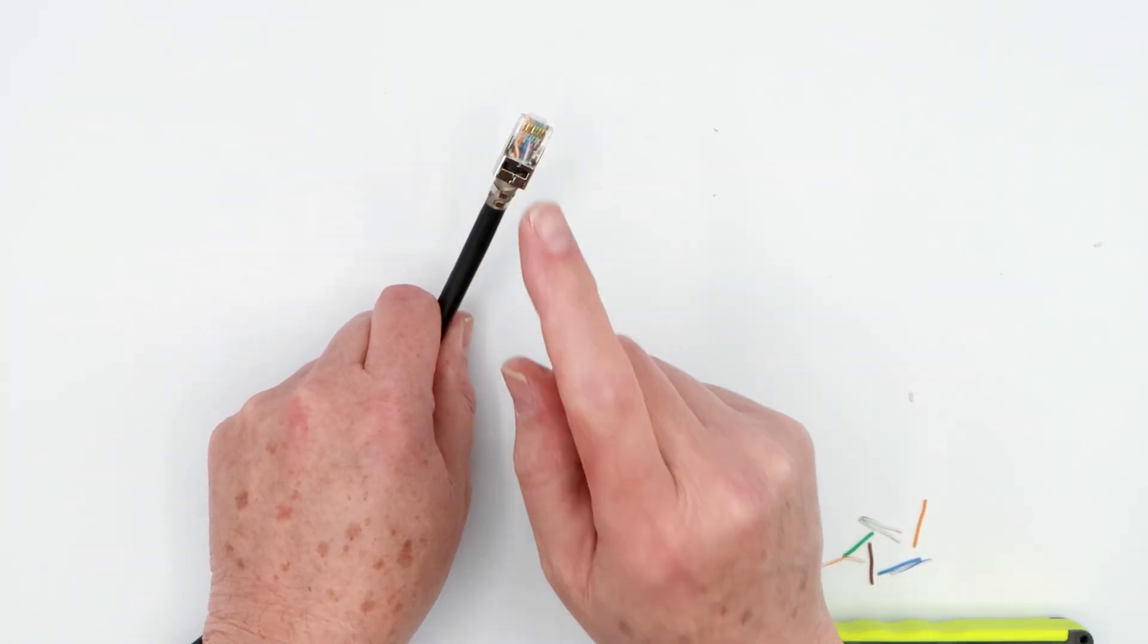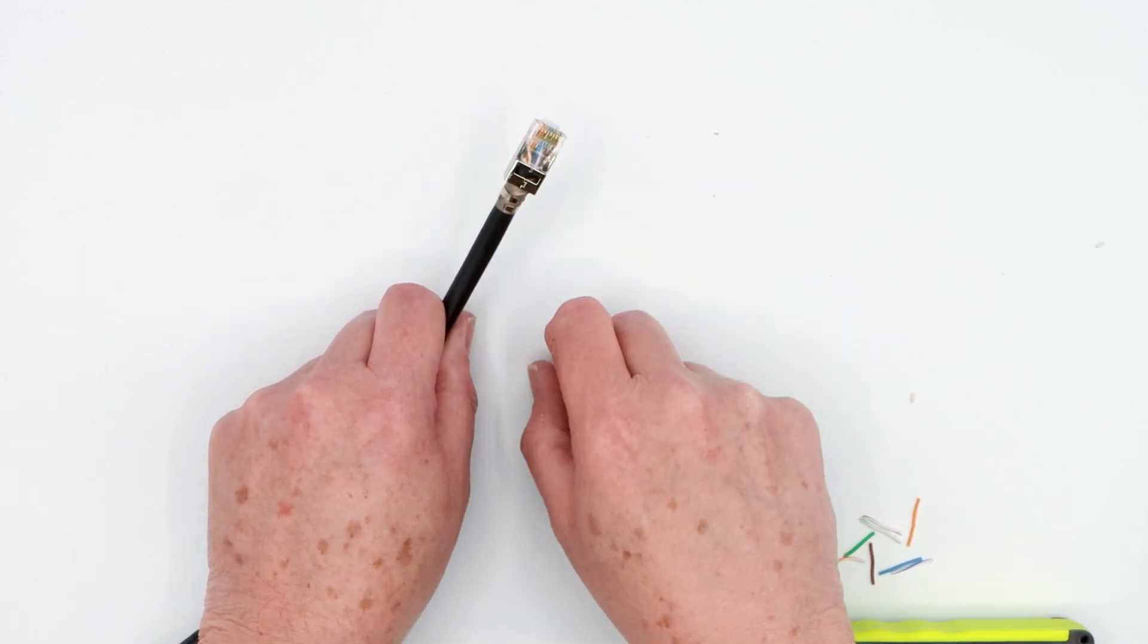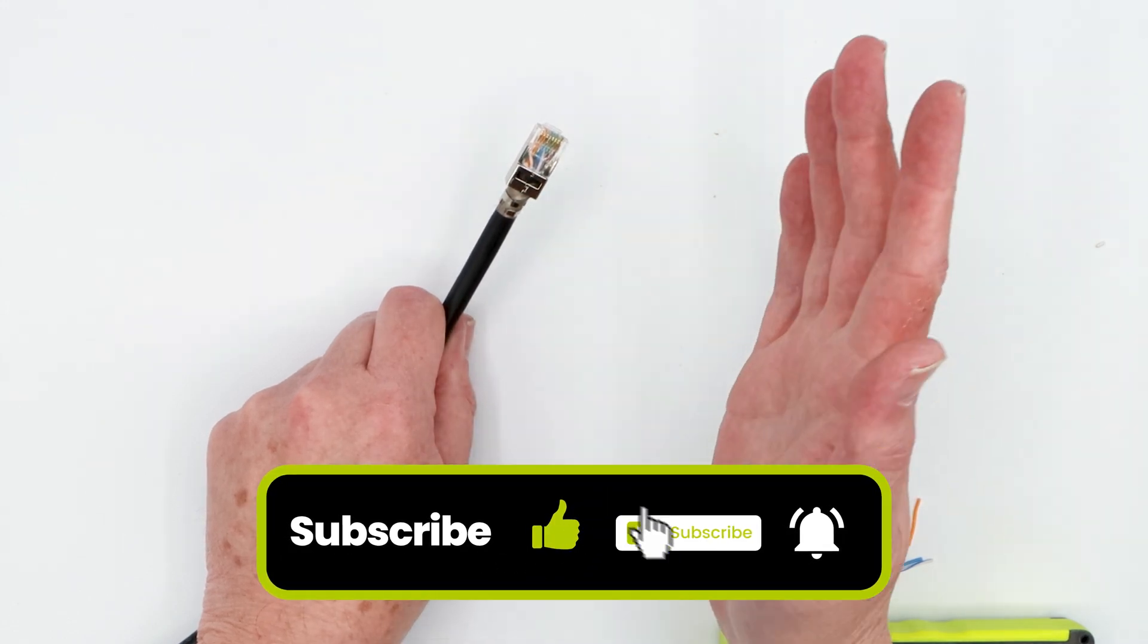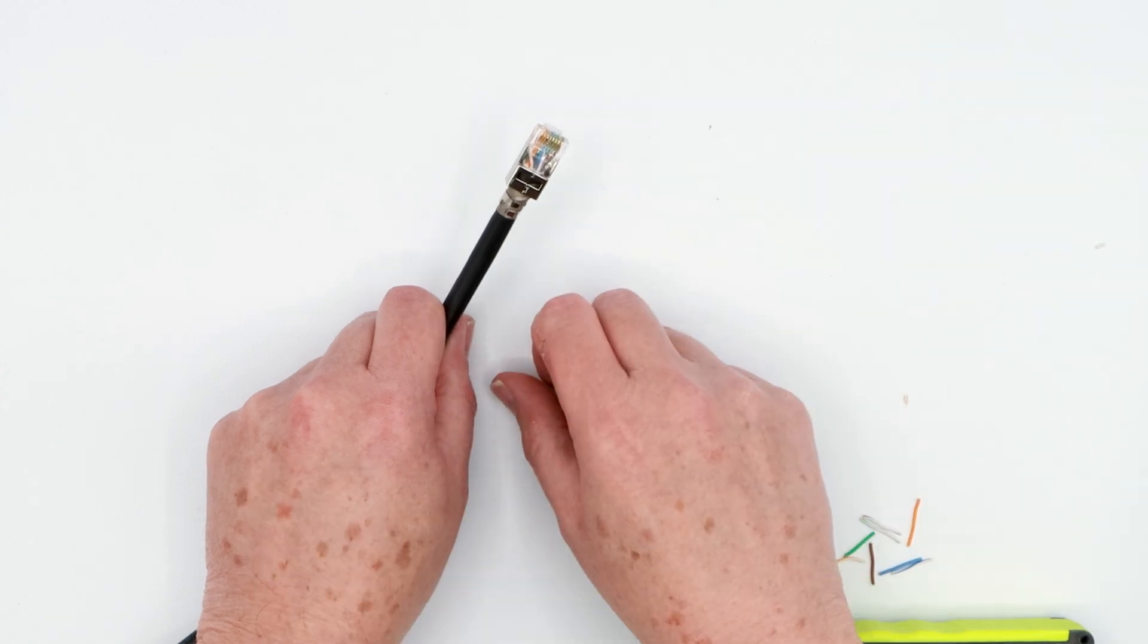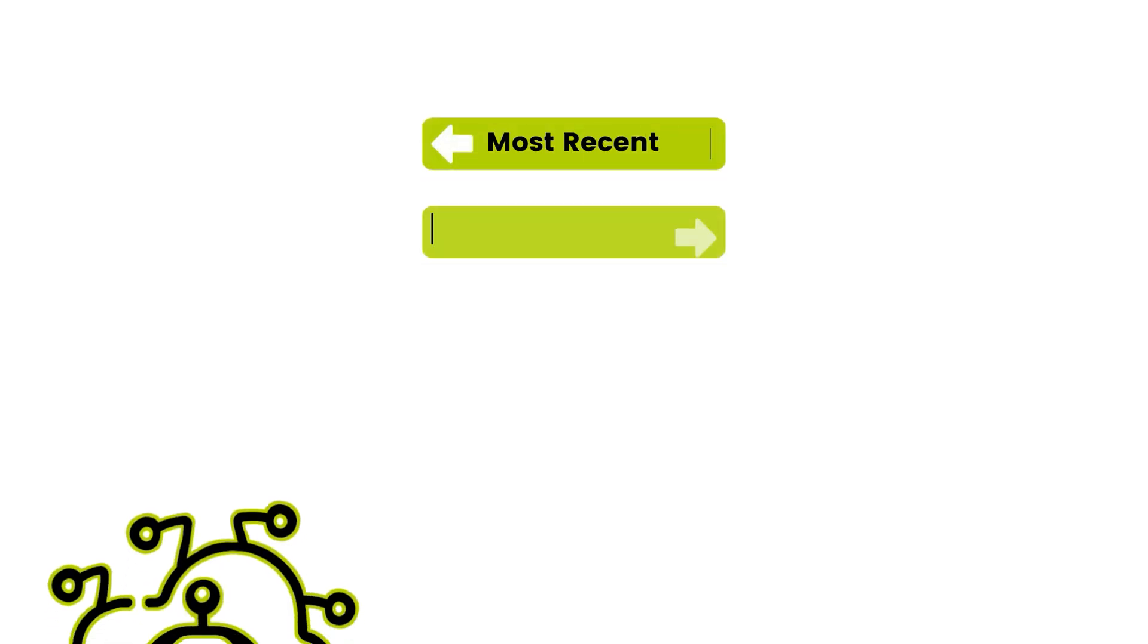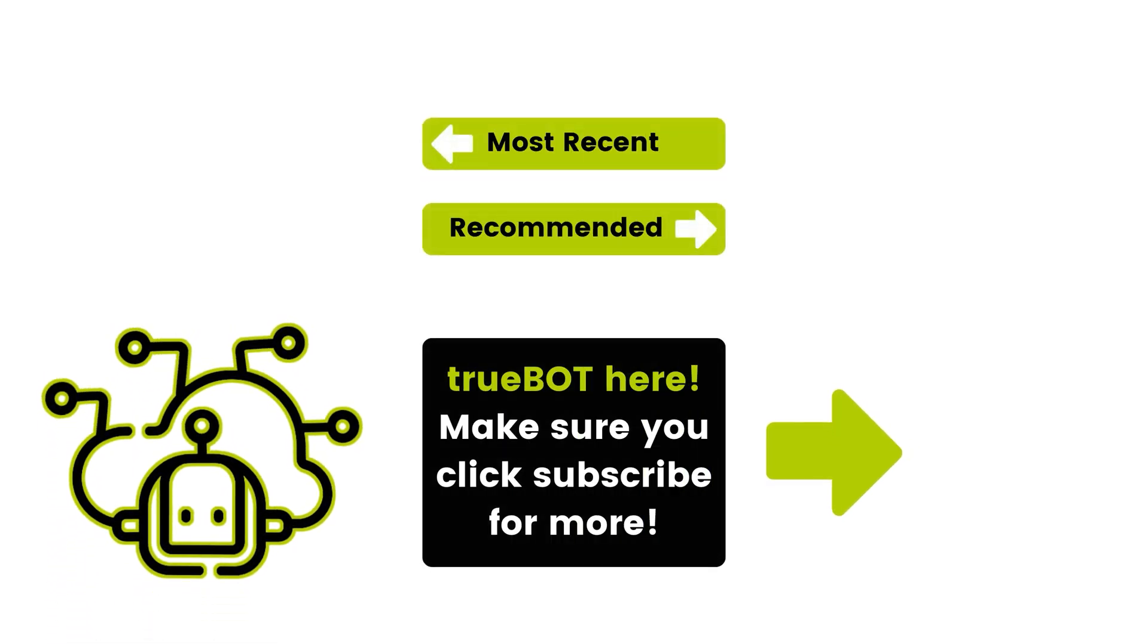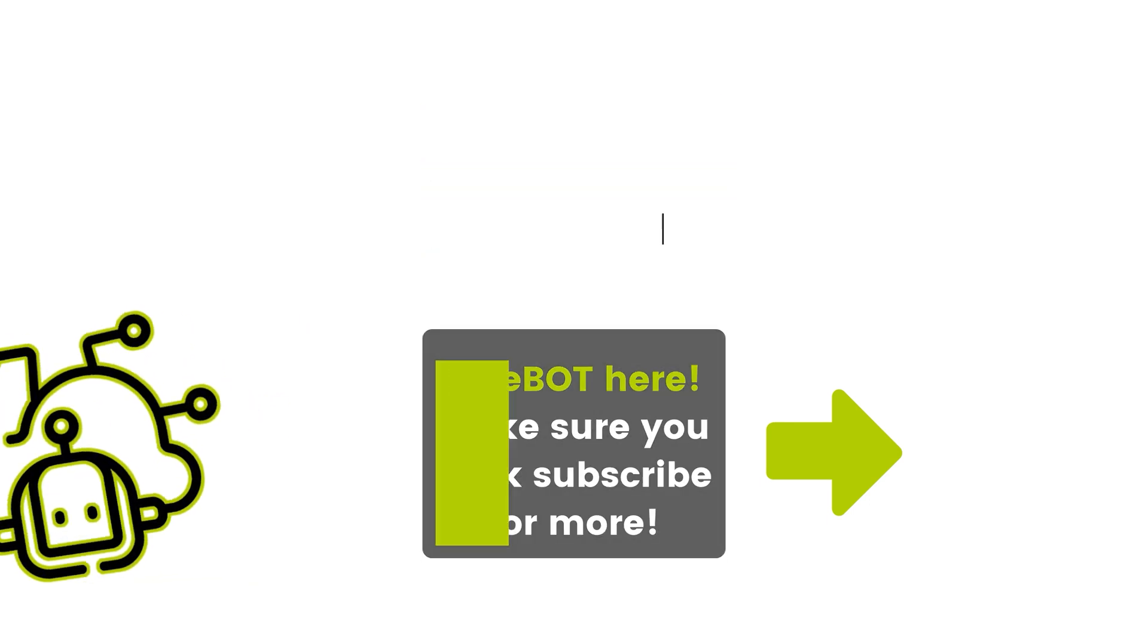So there you go. You now have a crimped and ready to go shielded RJ45 end on your cable. If you have any questions, please leave in the comments below. Give us a like or a dislike. Subscribe to our channel and with that I'm going to say you have a great day and happy networking.